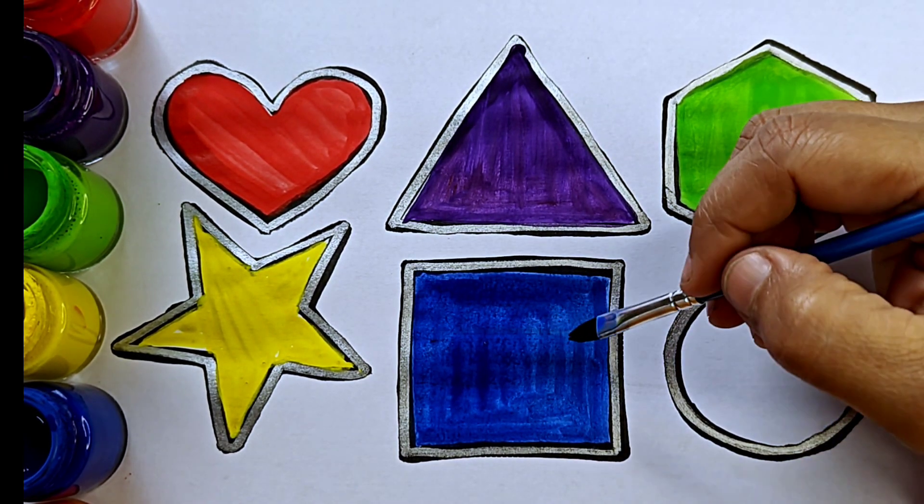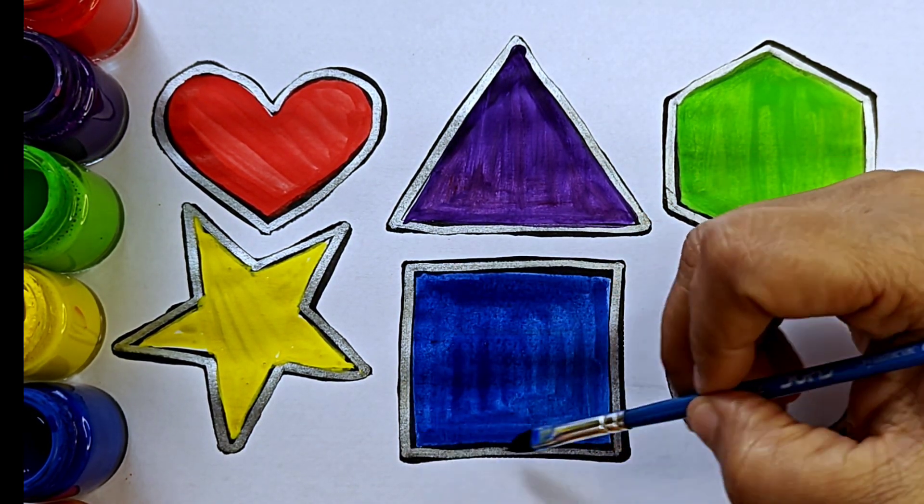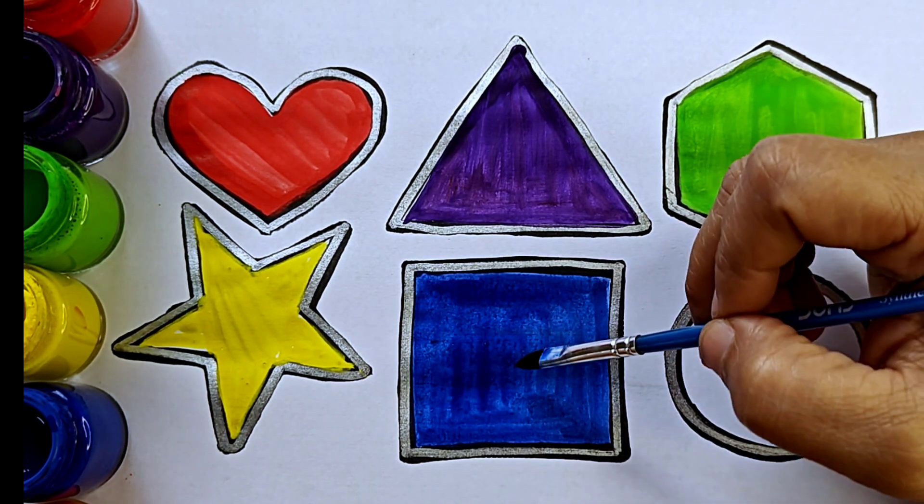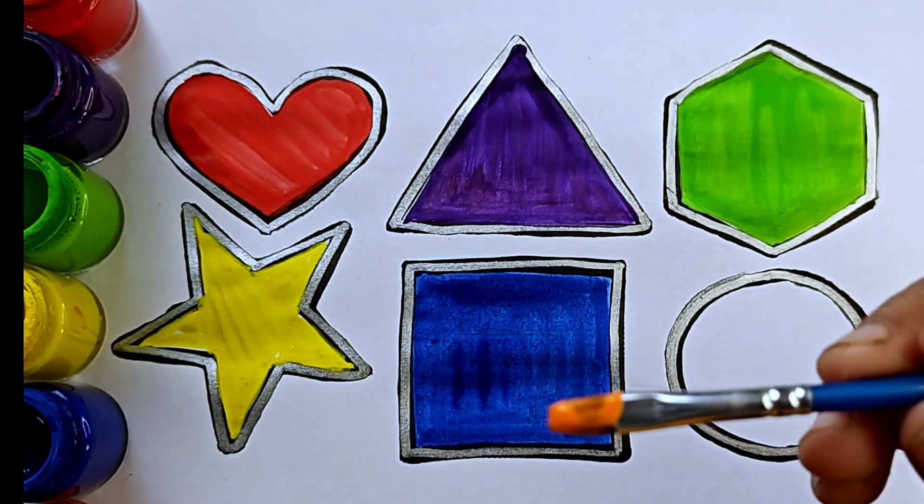This shape is square. It has four sides, one, two, three, four, and all sides are equal. Orange color.